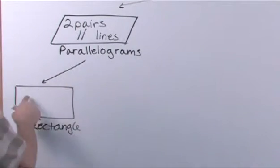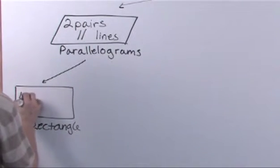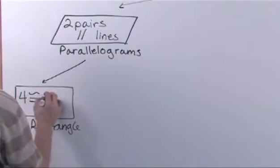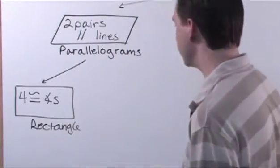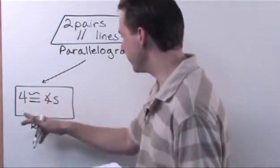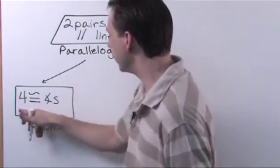And the definition of a rectangle is four congruent angles. Now, this may not be the definition that you learned when you're in second grade, but really in geometry, it just means that the four angles inside here are congruent. They're equal to one another.